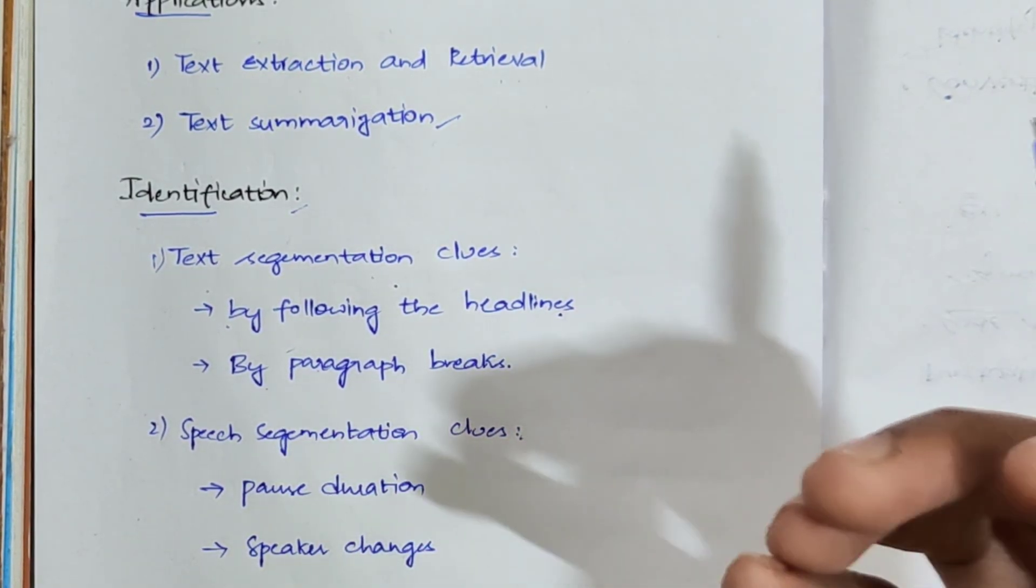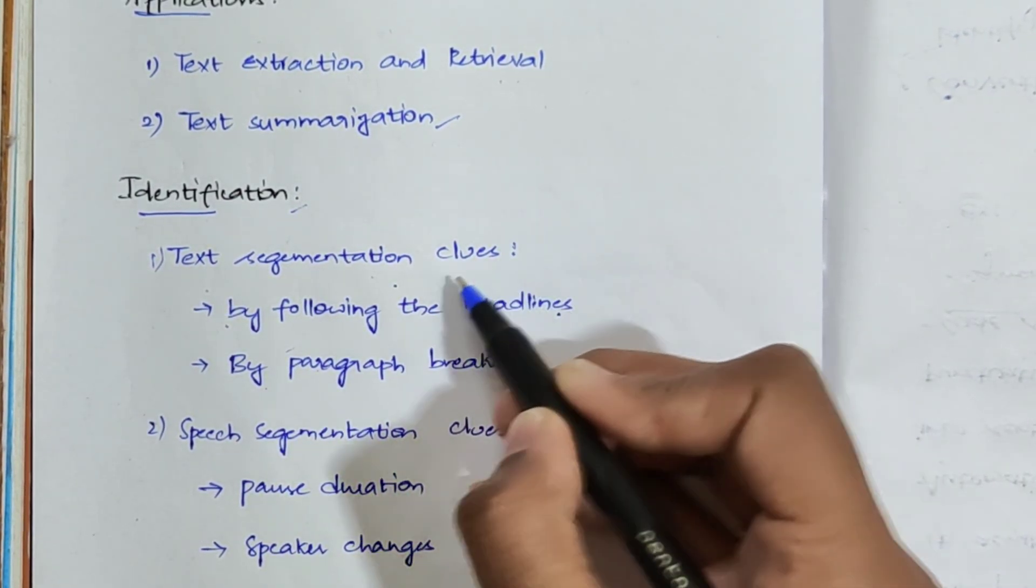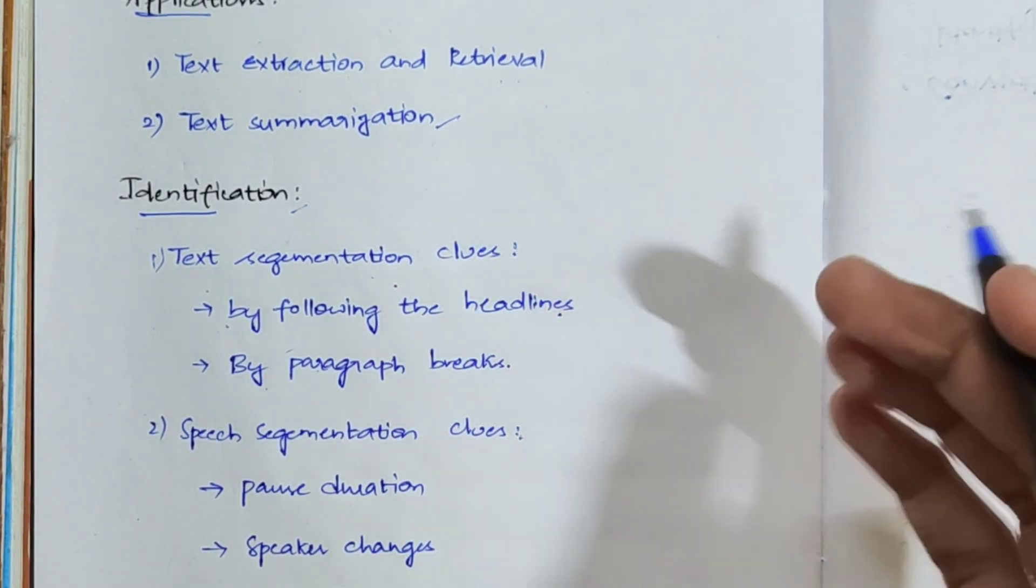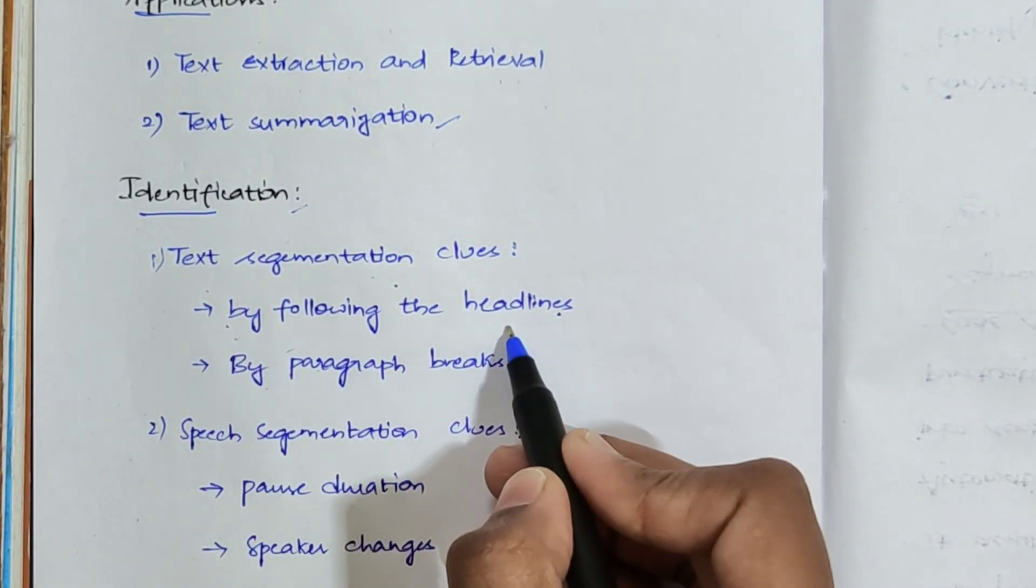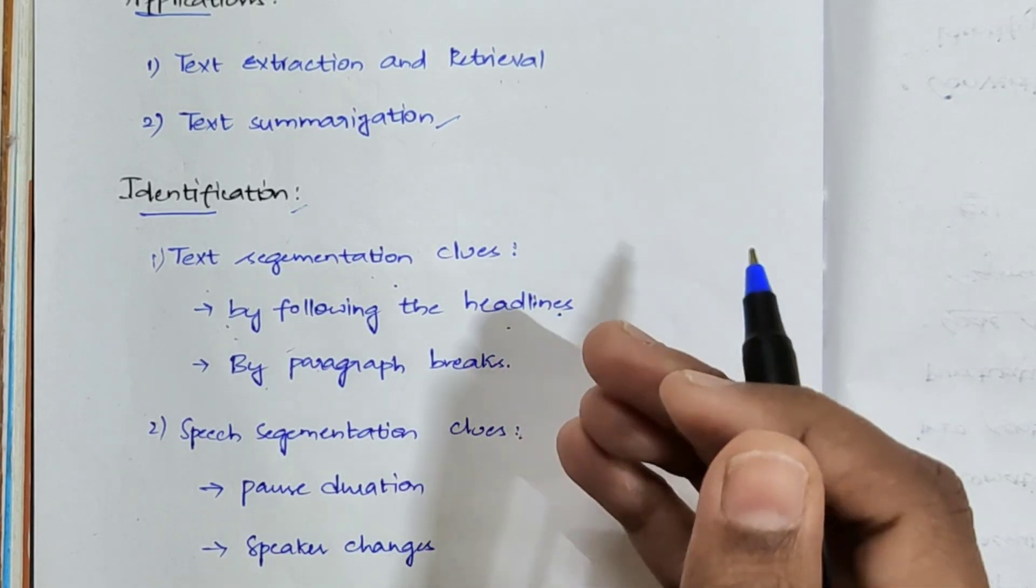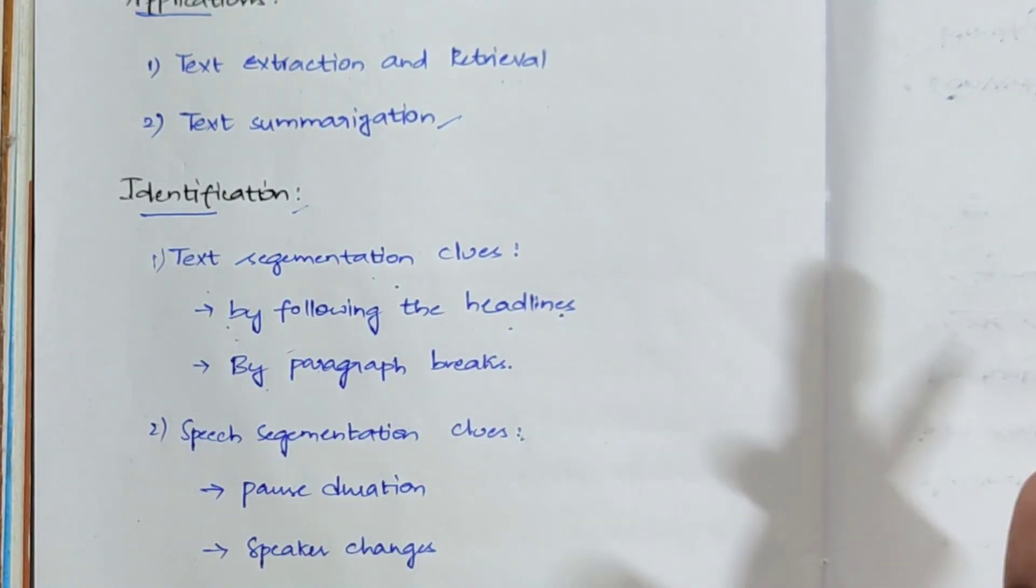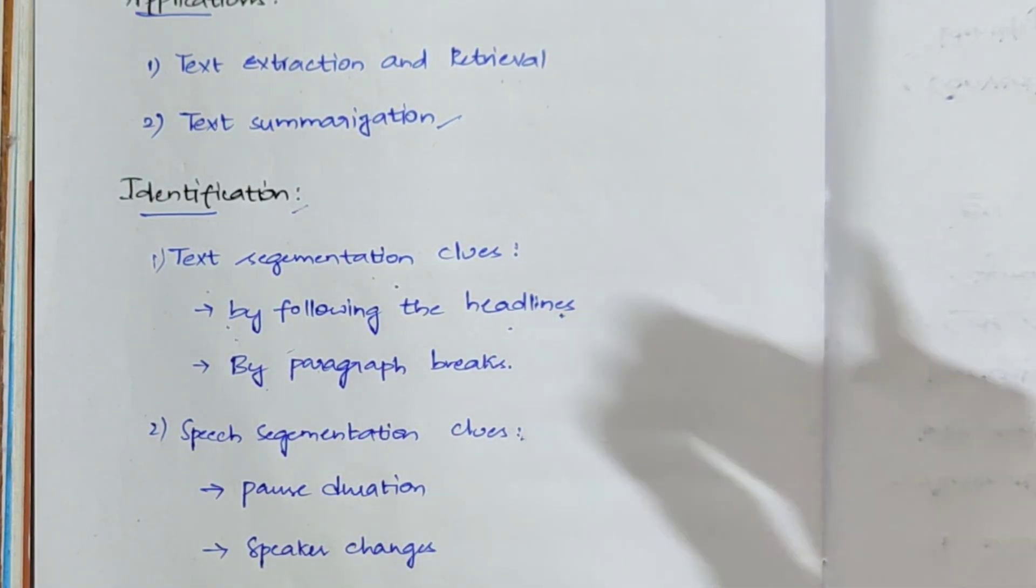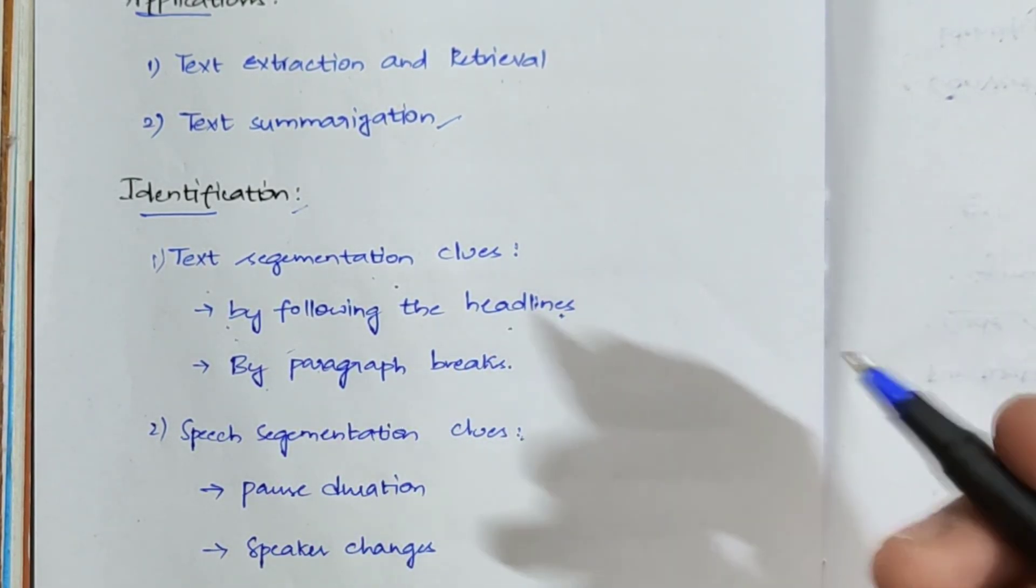In the first case, whenever some input text is given, how are you going to detect the boundary? First is by following the headlines. Take an example - you are reading some huge text and if you find those headlines, that means it is changing to a new topic, so there you can segment the text.